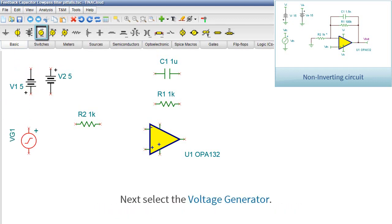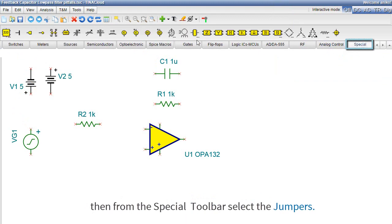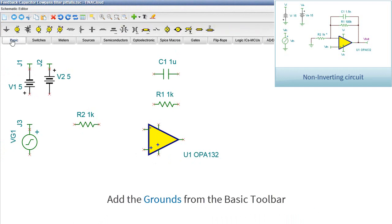Next, select the voltage generator, then from the special toolbar, select the jumpers. Add the grounds from the basic toolbar.